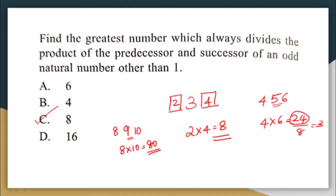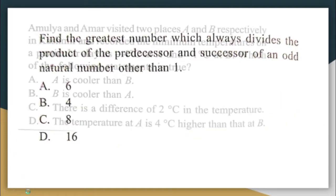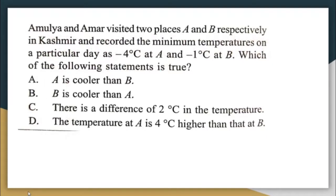Since they are asking for the greatest number, eight can be our answer. If we check divisibility by six, 80 is not divisible by six. Similarly, 80 is not divisible by 16, so those two options are eliminated. The correct answer here will be option C, eight.